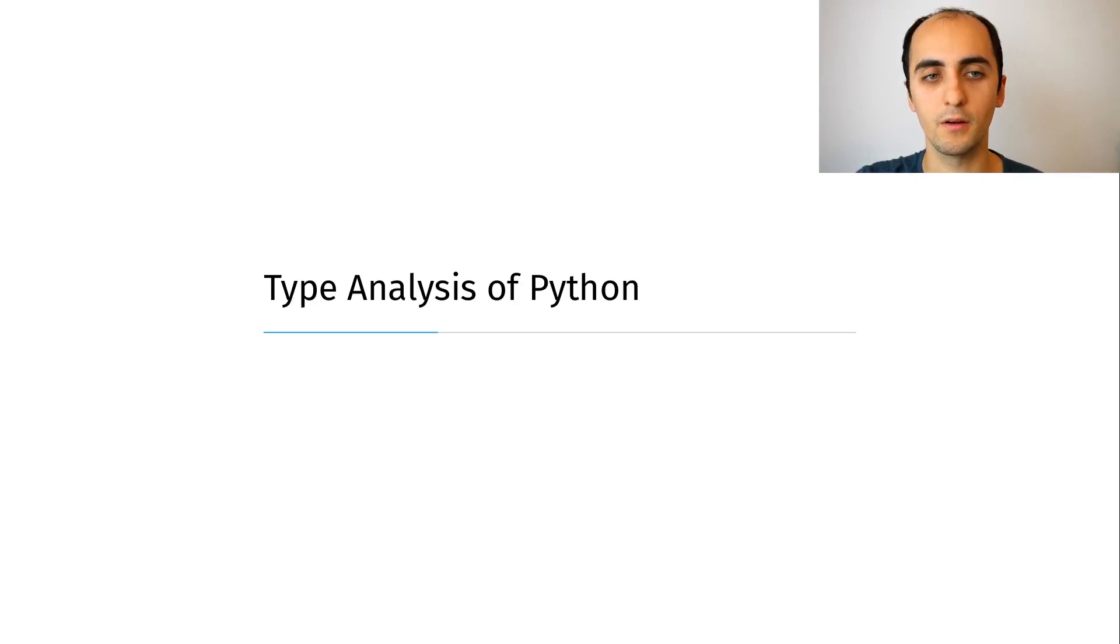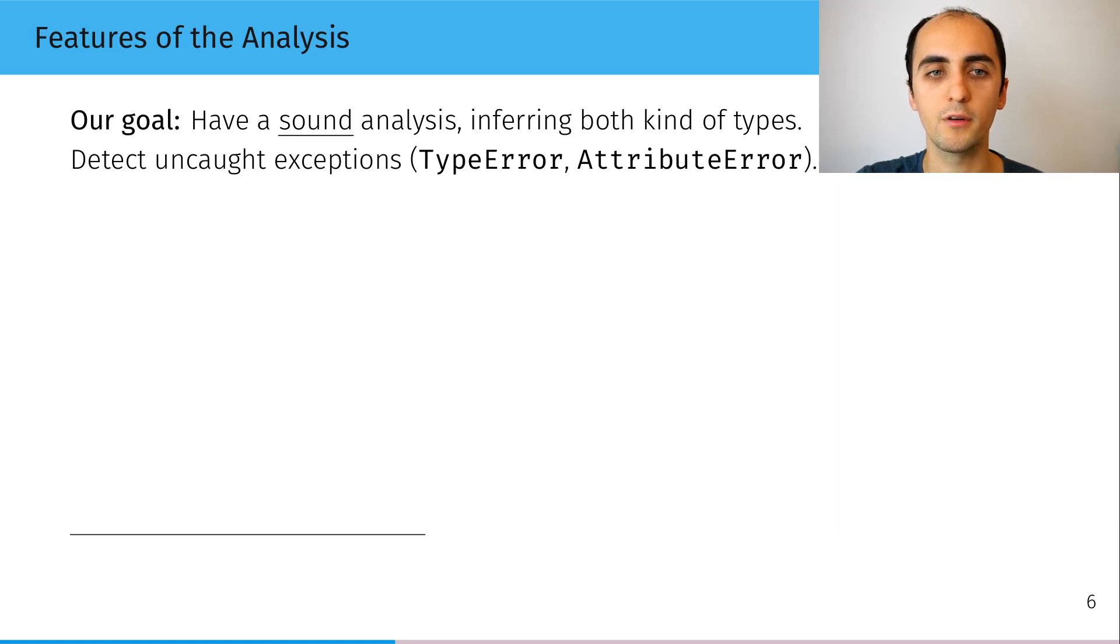So now let's dive into our type analysis of Python. Our goal is to have a sound analysis which infers both kinds of types. With that, we will be able to detect some runtime errors, which in Python are uncaught exceptions, and we'll be focusing mainly on type errors and attribute errors.